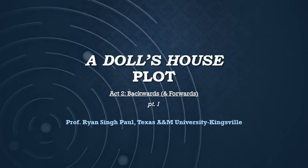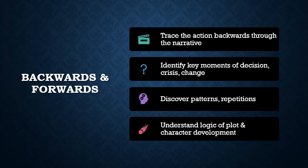In this video, I'm going to be talking about the plot of Act 2, but doing it a different way — approaching it from the end and working backwards. The method I want to illustrate is this backwards and forwards reading, where we trace the action backwards through the narrative. We start with the end of the act and look back to identify the key moments of decision, crisis, and change — the moments that led to the end. How did we get to where we are at the end of this act?